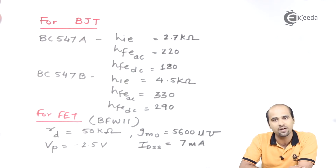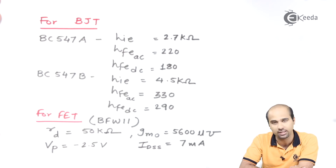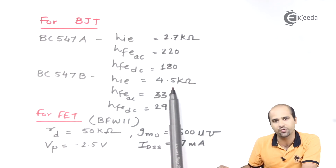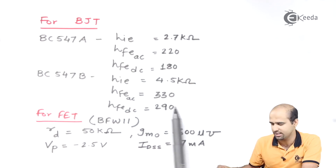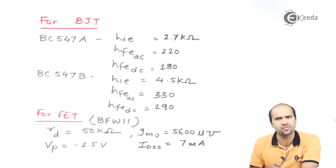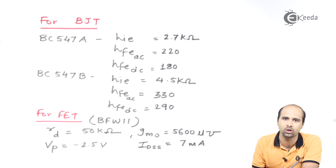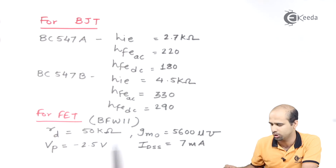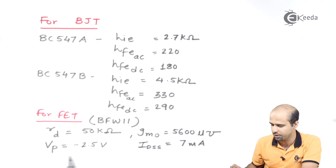For BC547A: HIE is equal to 2.7 kilo ohm, HFEAC is equal to 220, and HFEDC is equal to 180. For BC547B: HIE is equal to 4.5 kilo ohm, HFEAC is equal to 330, and HFEDC is equal to 290. For FET, we use BFW11 whose parameters are: RD (dynamic output resistance) is 50 kilo ohm, GMO (offset transconductance) is 5600 micromho, VP is equal to minus 2.5 volts, and IDSS is 7 milliampere.